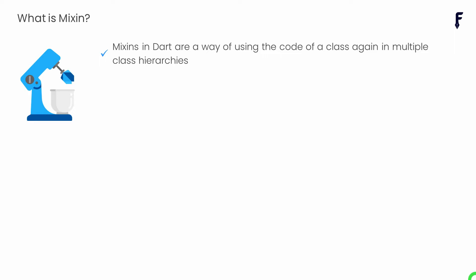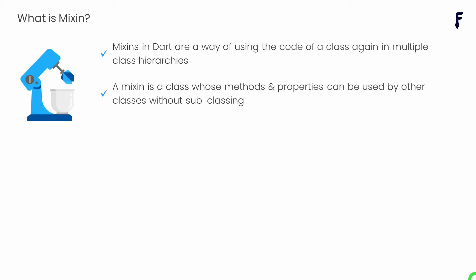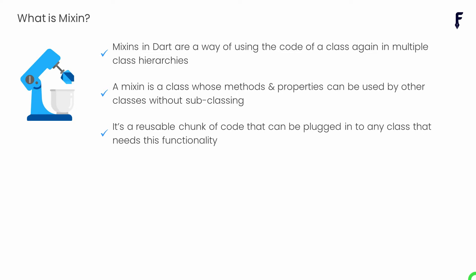Let's start from the first point — what is a mixin? Basically, mixins in Dart are a way of reusing code of a class in multiple class hierarchies. Syntactically, mixins are very much similar to a class — there are lots of similarities but also lots of differences. A mixin is a type of class whose methods and properties can be used by other classes without subclassing. From a coding point of view, a mixin is a reusable chunk of code that can be plugged into any class that needs that functionality.